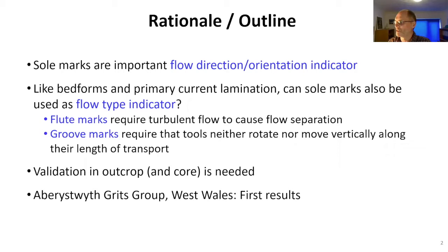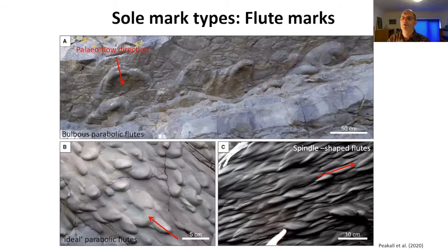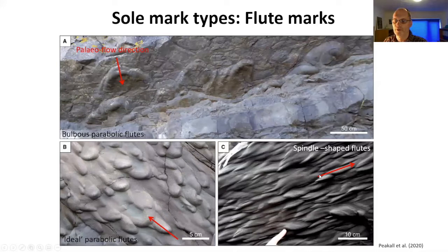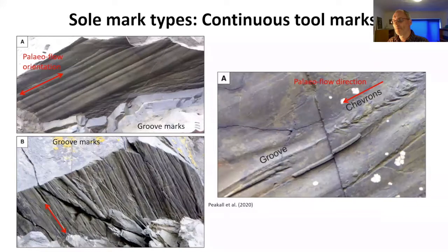Sole marks can be subdivided into scour marks and tool marks. The main type of scour mark is the flute mark, formed by turbulent eddies that scour the bed surface — very good indicators for paleo flow direction. Examples shown include large bulbous parabolic flutes, smaller ideal parabolic flutes, and spindle-shaped flutes, each with an interpretation of paleo flow direction added to the photographs.